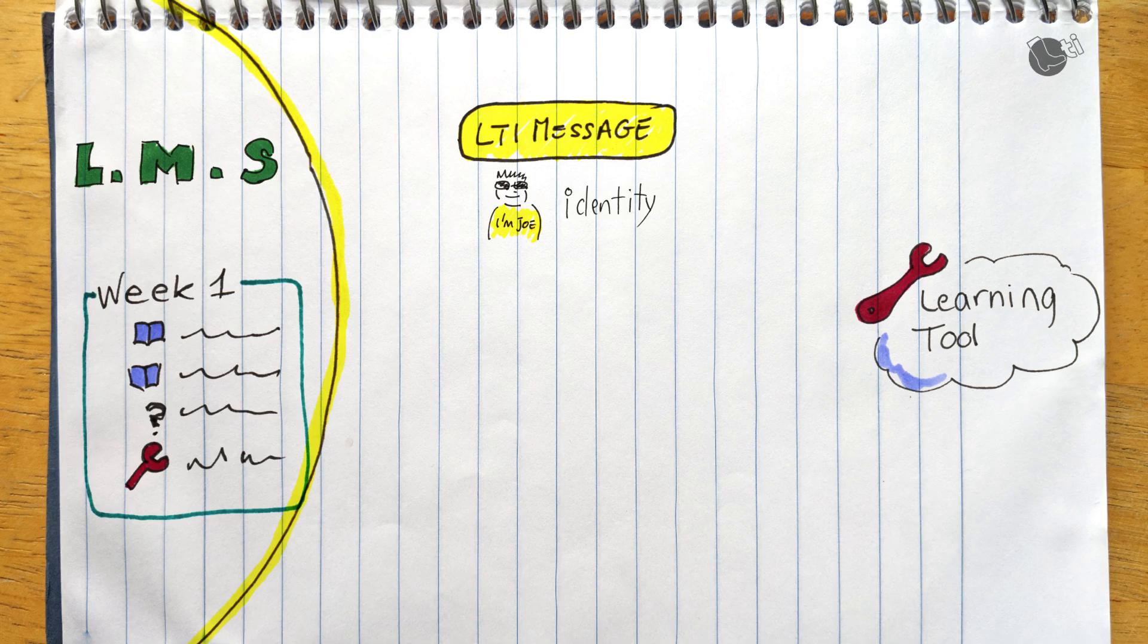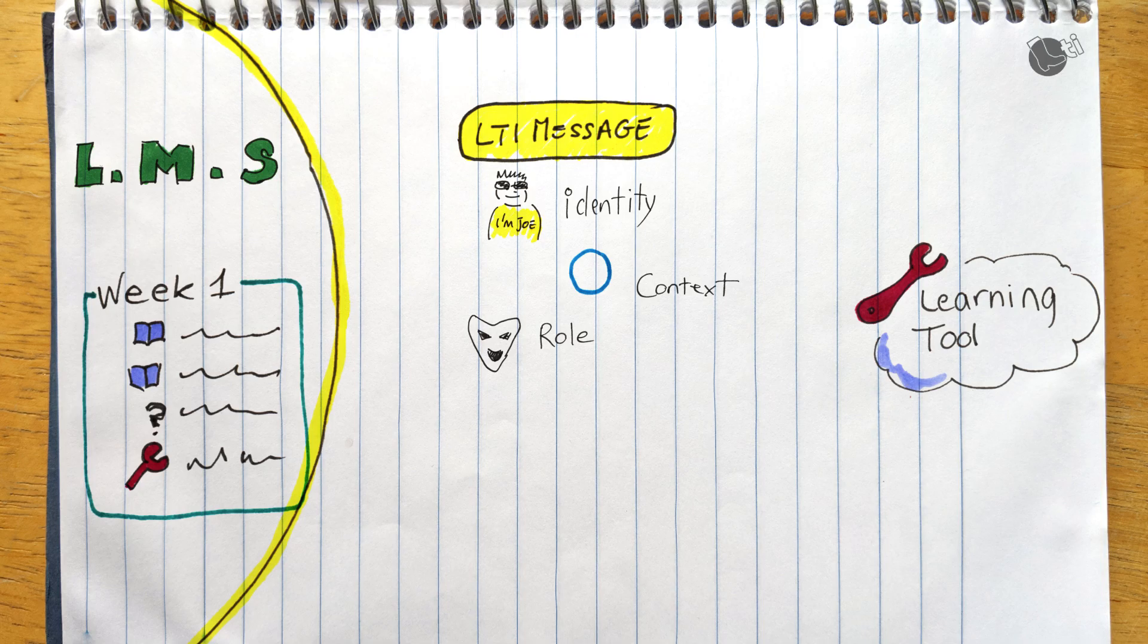We need to know which course is launched by specifying the context. So you have in the LTI message information about the course ID, course name, stuff like that. And as important, we need to know the role of the user in that context. The tool will often differ a different experience based on whether you are an instructor or not, for example.